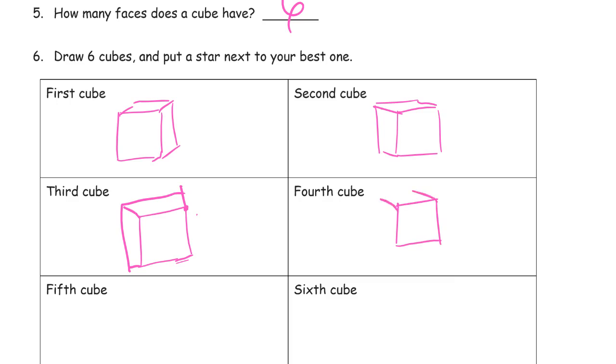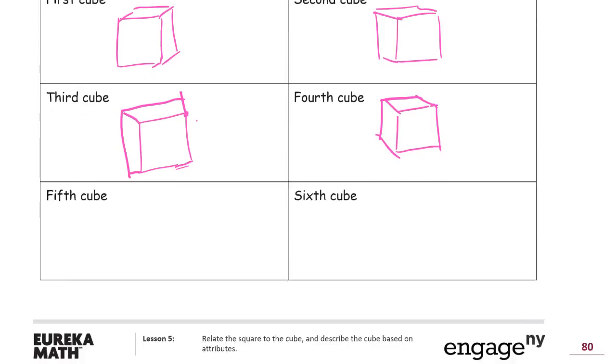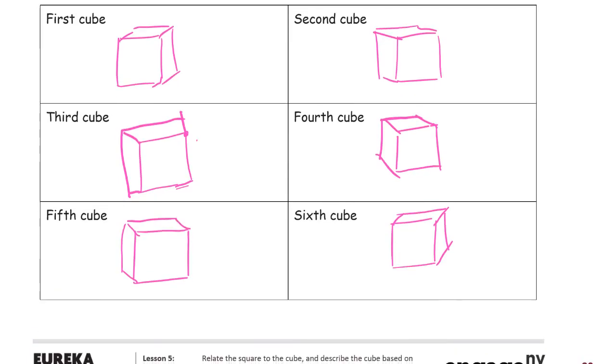Here's your fourth cube. And that's not really a very good square. I'm doing this backwards. Let me erase. Make the L first. And here's my fifth one. Here's my sixth one. Try to keep straight lines. And I'm supposed to put a star next to my best one. I think this is probably my best one, so we could put a star there.